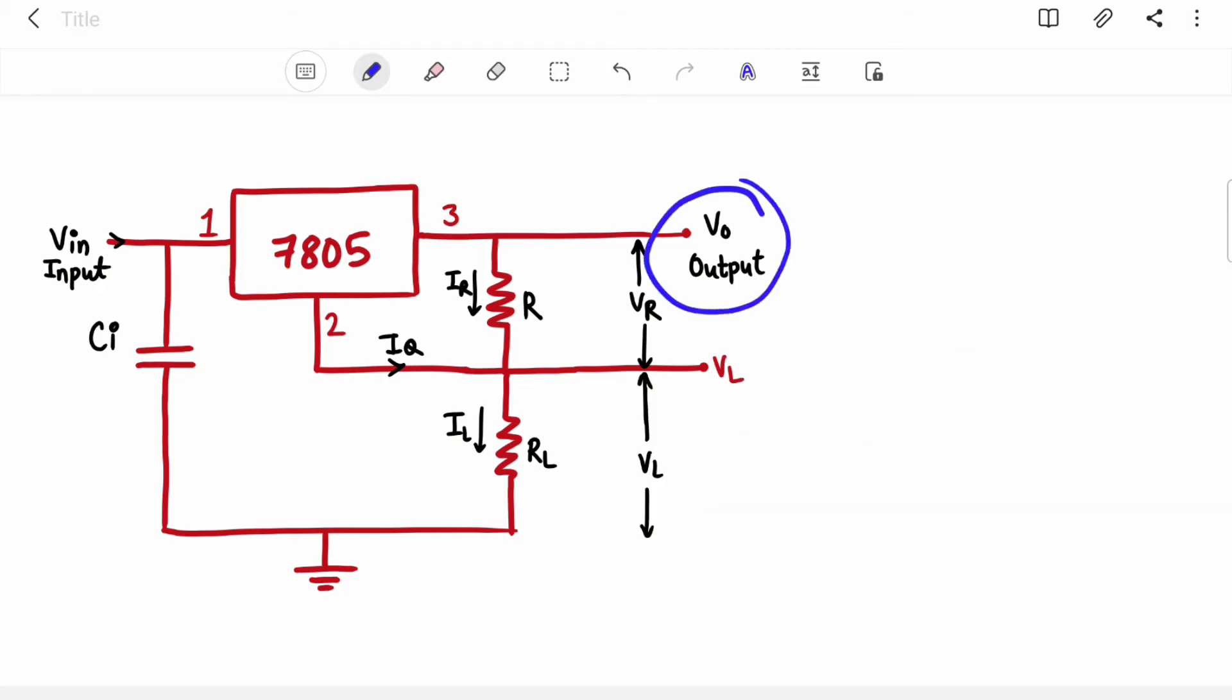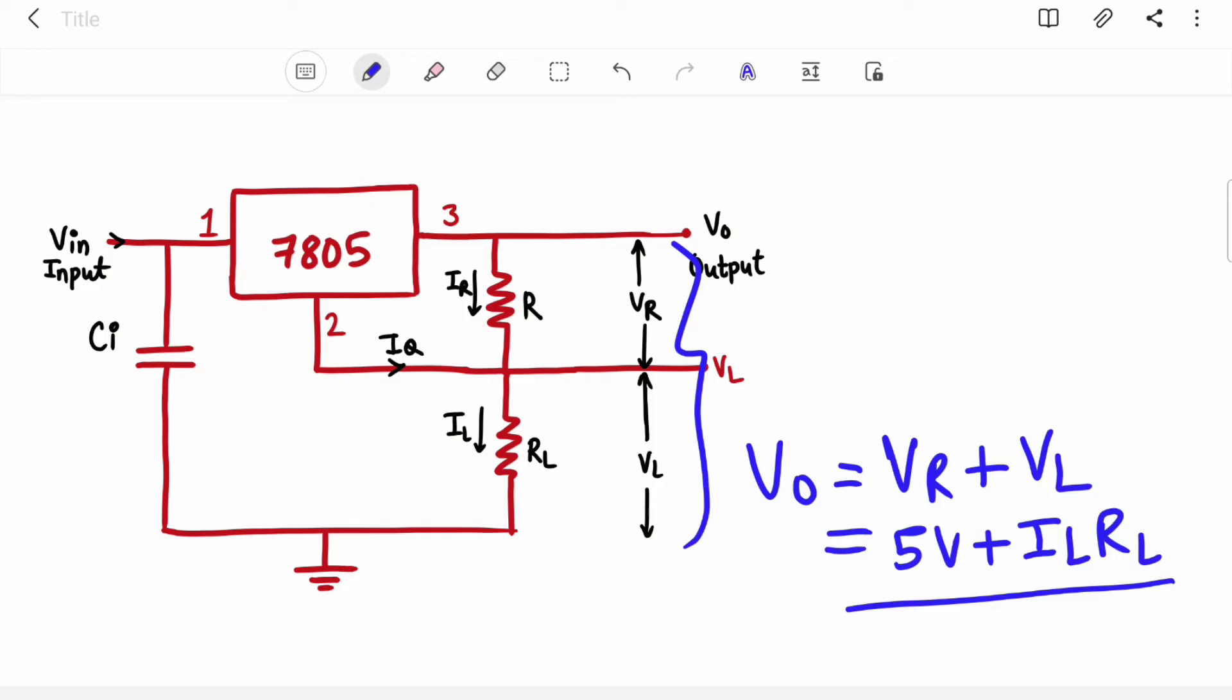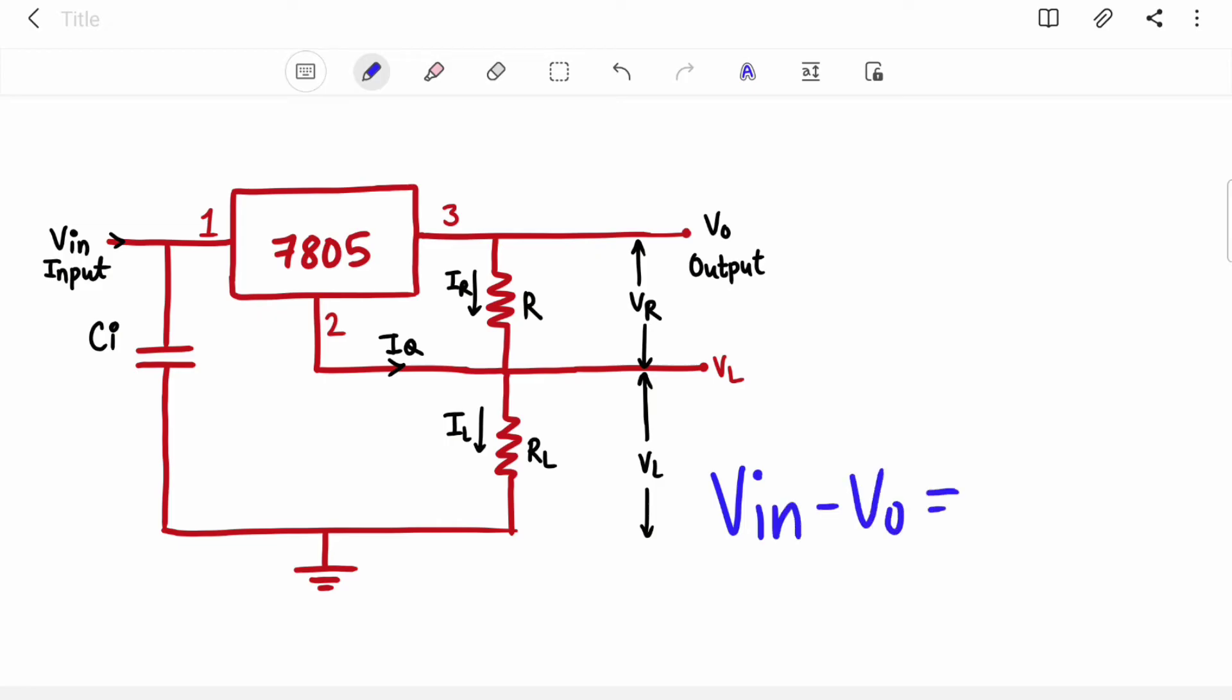Now we need to find out what is output voltage. Now you must be thinking it is 7805 IC so output voltage must be 5 volt, but no. That is just voltage across this R resistor. Here output voltage is voltage between these two points. So you can write VO equal to sum of these voltages: VR plus VL. Now VR we know is 5 volt and VL is nothing but IL into RL.